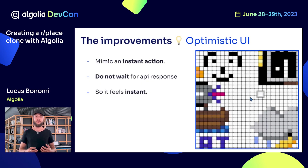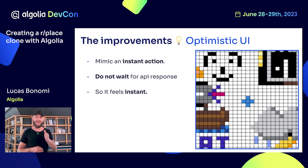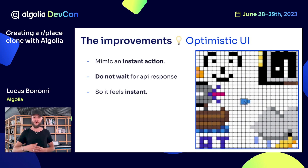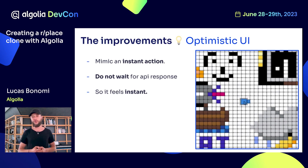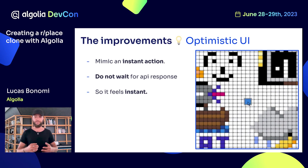Then I decided to go for an optimistic UI approach. Because of the Next.js API route and then the call to Algolia, from the moment you clicked on the pixel to the moment the pixel was re-indexed into Algolia with the proper color, it could vary from 500 milliseconds to one and a half seconds — quite long. Optimistic UI approach is a way to mimic an instant action: you do not wait for the API response to color that pixel, and it feels instant. Your users will thank you — without this, drawing on the canvas would have been difficult.